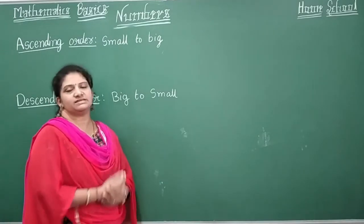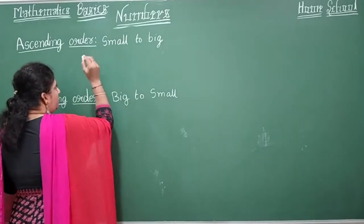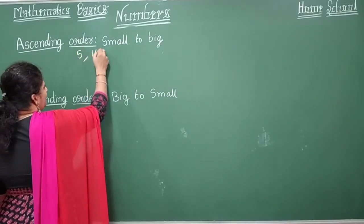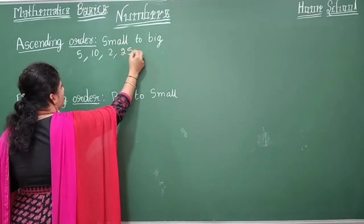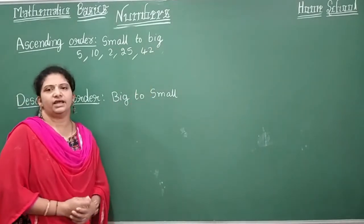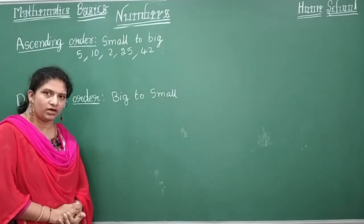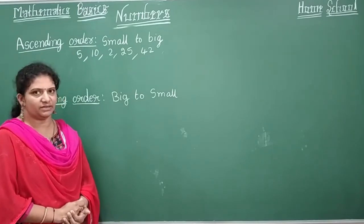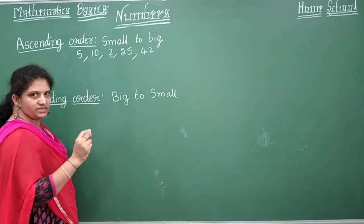Let's start with one example. Let's take any 5 numbers: 5, 10, 2, 25, 42. There are 5 numbers here. How do you arrange them in ascending order? Ascending order is the arrangement from the smallest number to the biggest number. So in these numbers, which is the smallest? Yes, 2 is the smallest number.